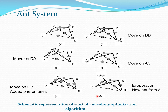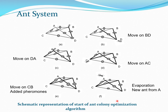Once the ant has completed its tour, pheromones on all traversed paths are increased. As time goes by, some of this pheromone starts vanishing. A new ant then comes in and starts its own solution — this time starting from city A.